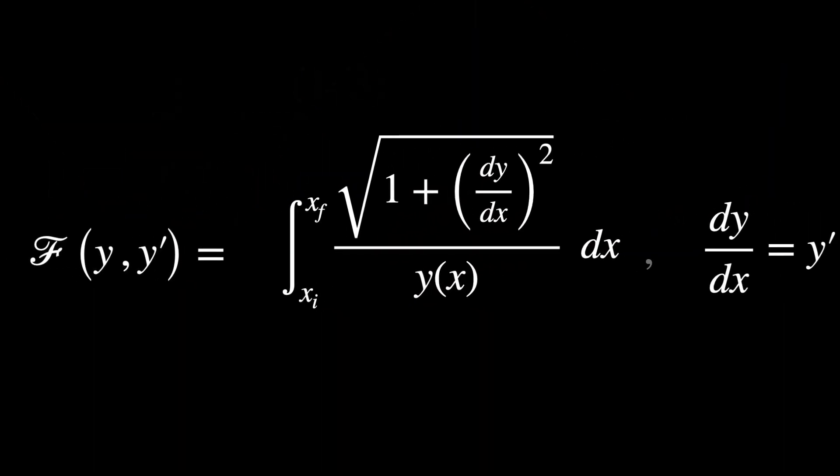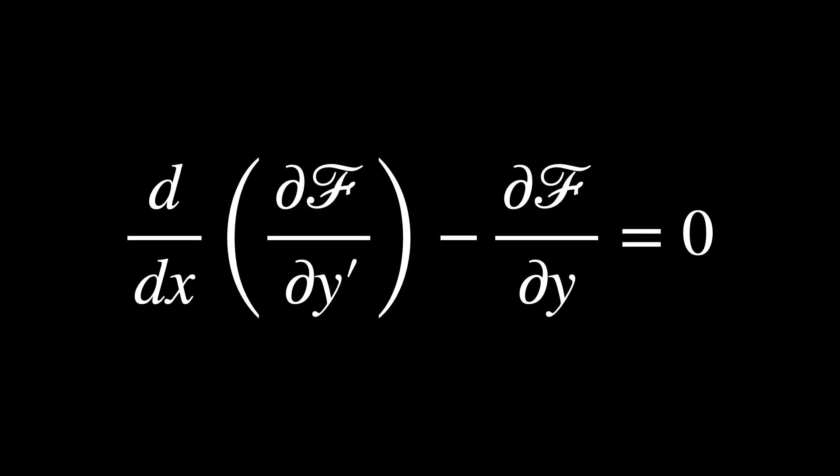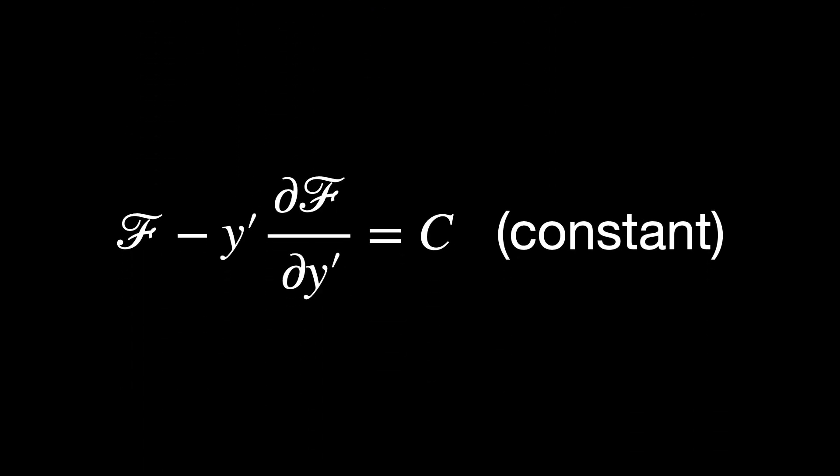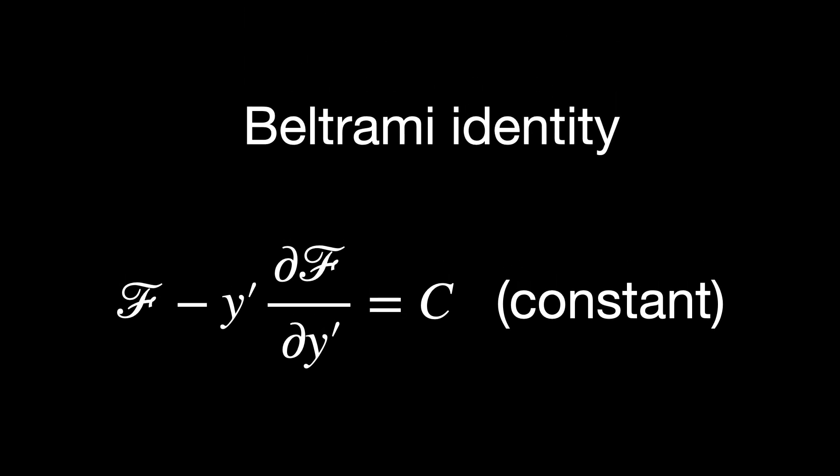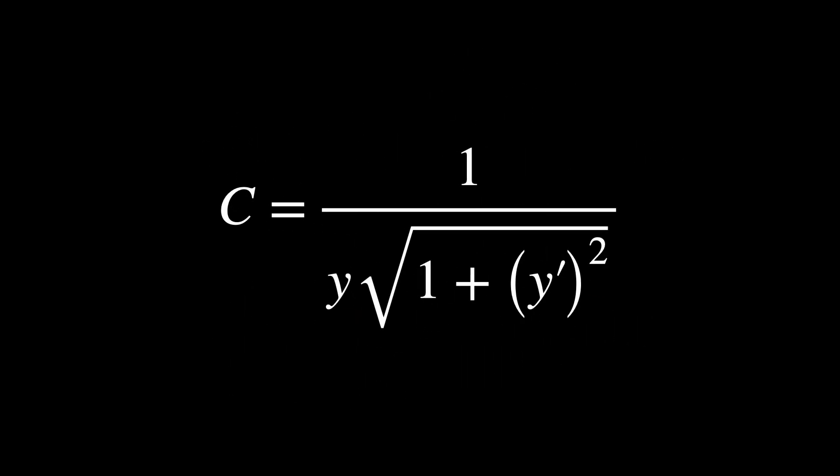The integrand is also called the Lagrangian, and it can be represented this way. All we have to do is apply the Euler-Lagrange equation. But since f here doesn't depend explicitly on x, we reduce the Euler-Lagrange equation to the Beltrami identity. I know it doesn't seem so, but this is a great simplification of the problem. For more details, as with every video in the channel, check out the PDF link in the description. Then we plug this equation in the second, and that's what we get. We'll see shortly what the geometrical interpretation of this constant is. But for now, try to guess it on your own.